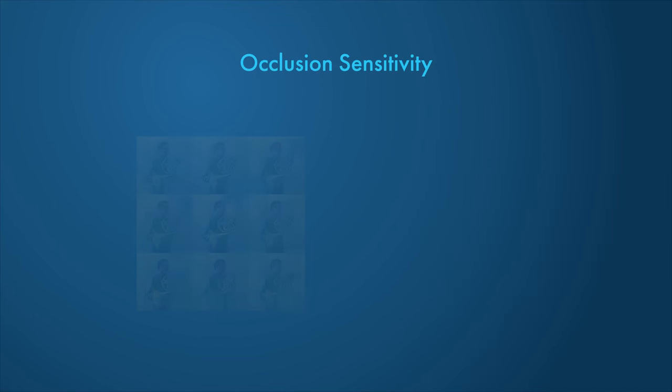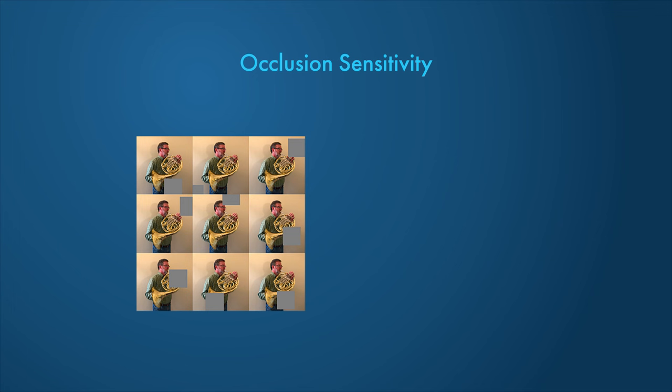Occlusion sensitivity is a simple technique. It computes a map of the change in activation when parts of the input are occluded with a mask. The occluding mask is moved across the input data, giving a change in classification score for each mask location.